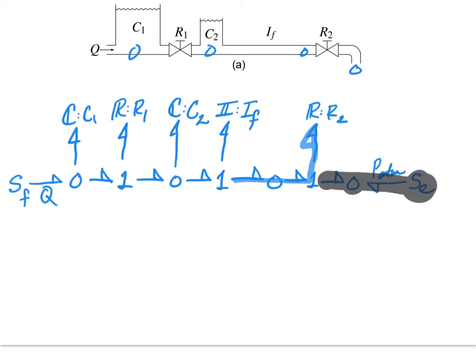My simplified bond graph will look like this. I'll have my flow source which goes into a zero junction. That zero junction has a C element attached to represent the first accumulator, and then I proceed to a one junction where I have my valve with resistance R1.